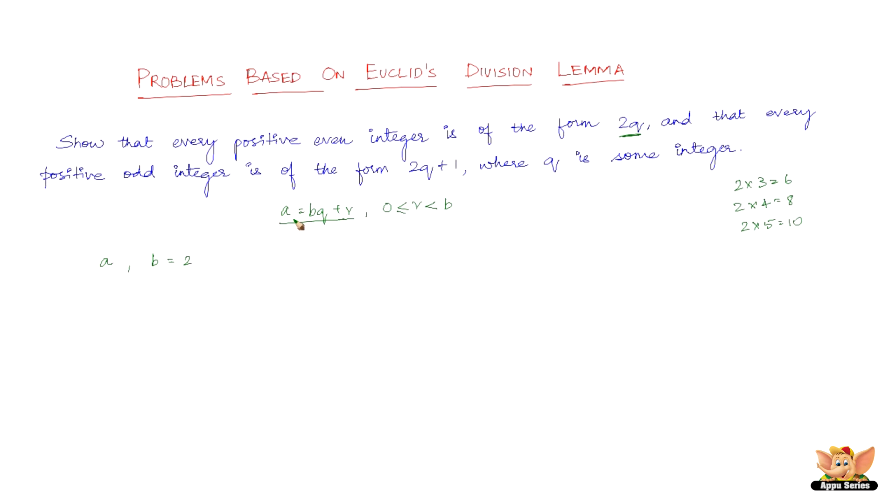q and r such that a equals bq plus r. But now that we've taken a as some positive integer and b as 2, let us substitute it.